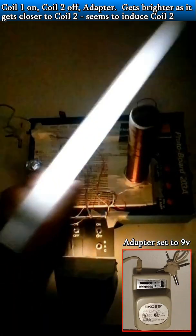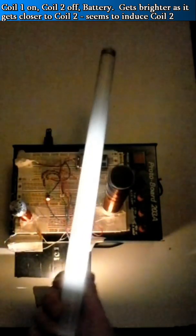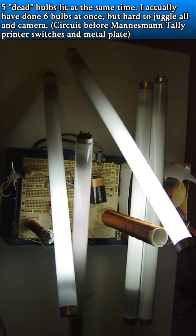By the way, the toggle switches with metal plate were salvaged from an old printer. In fact, all my Tesla coils were created entirely with parts I already had.